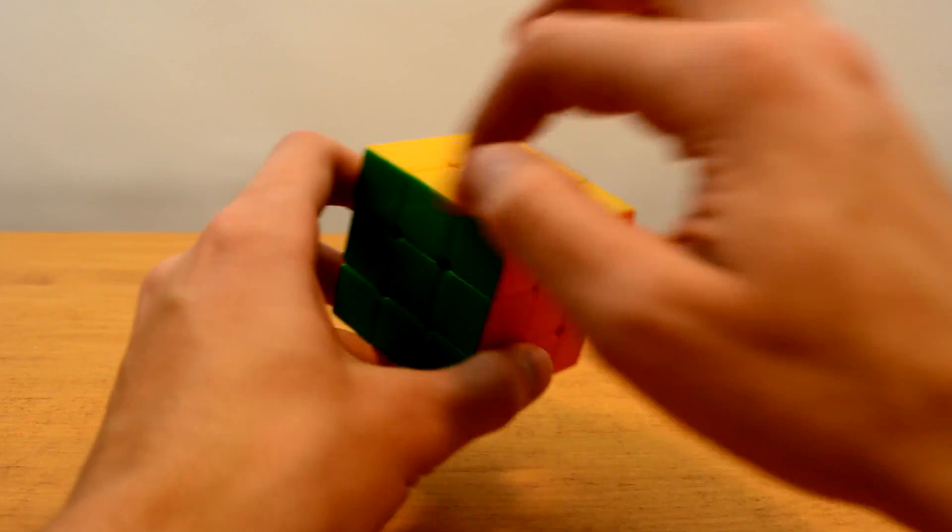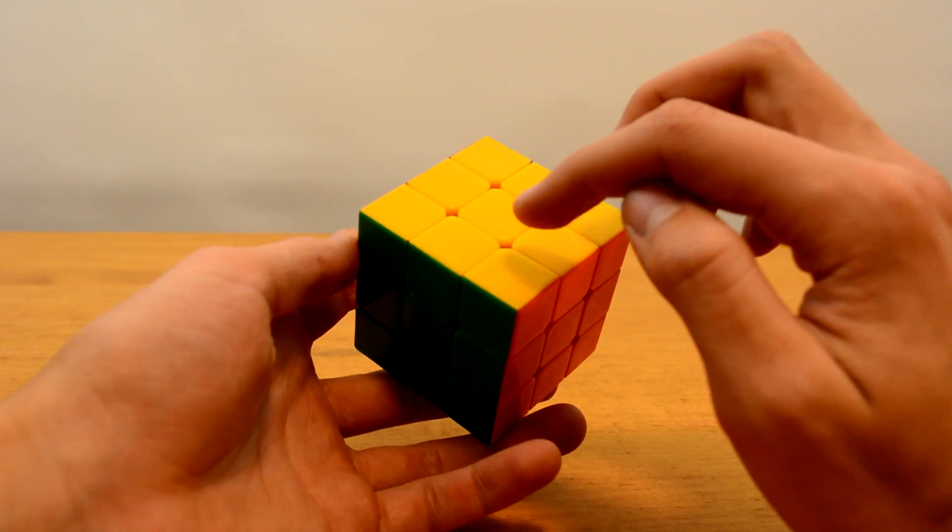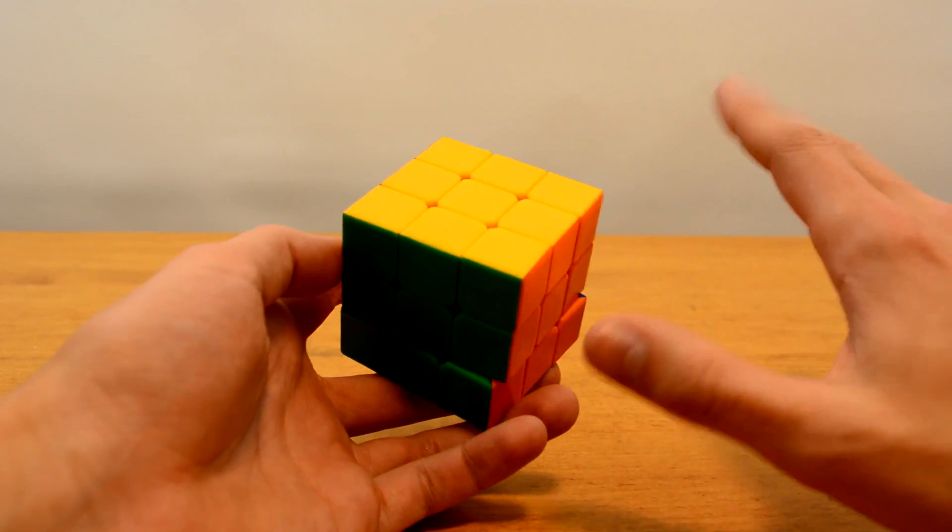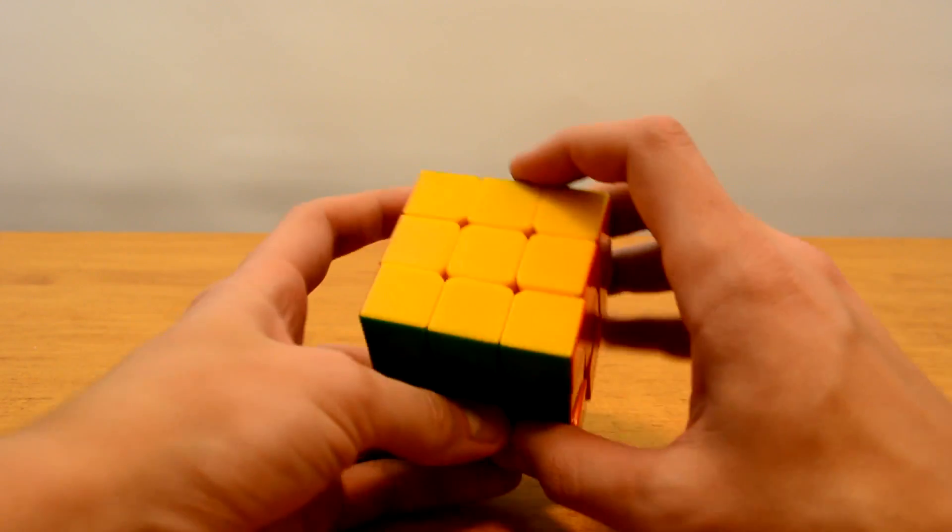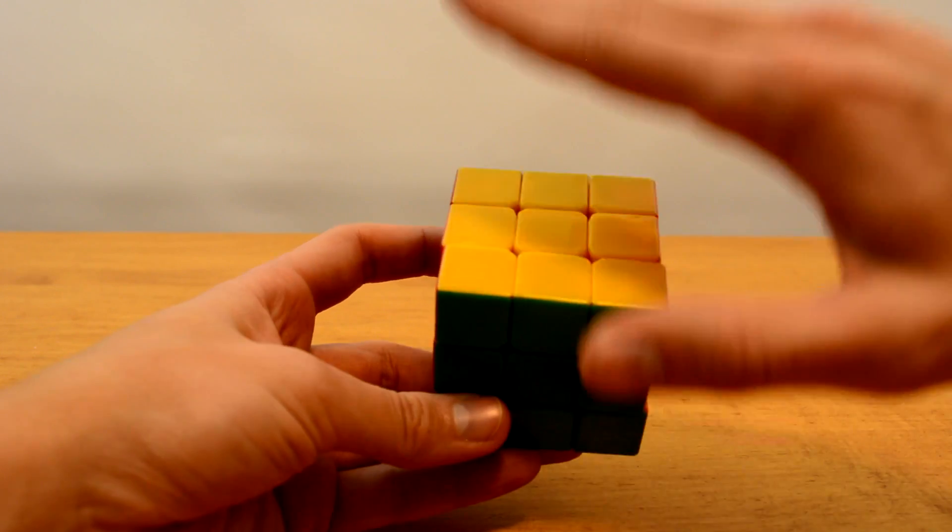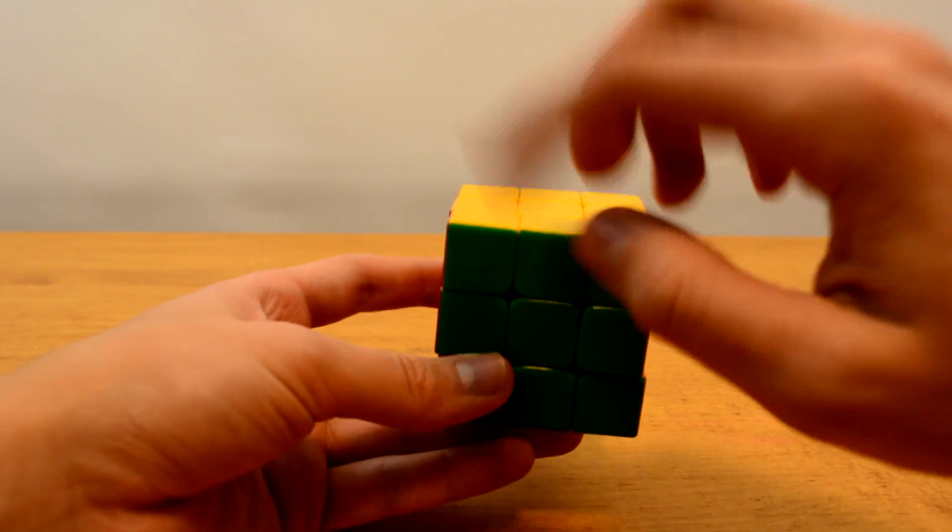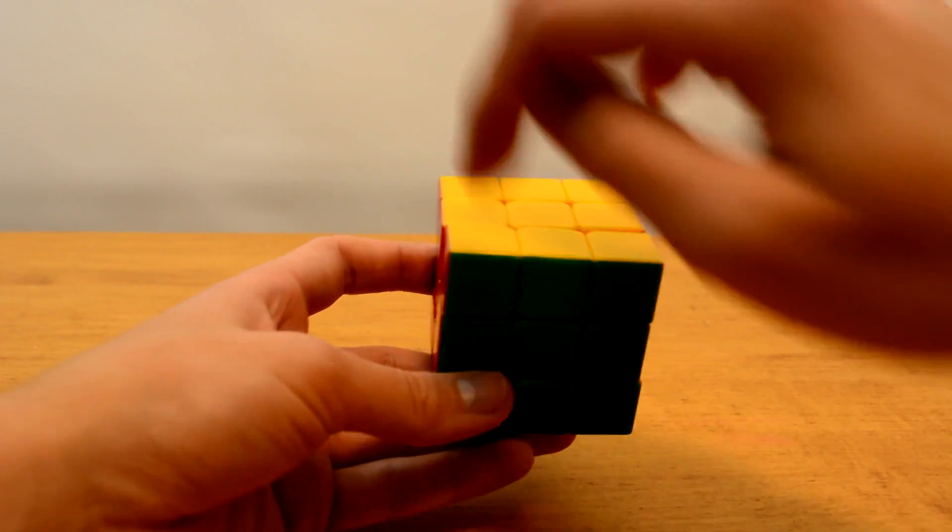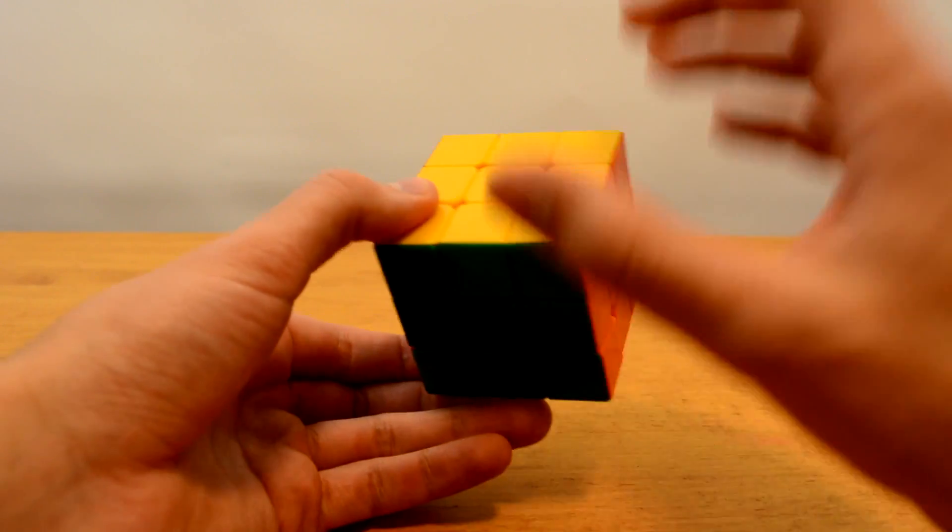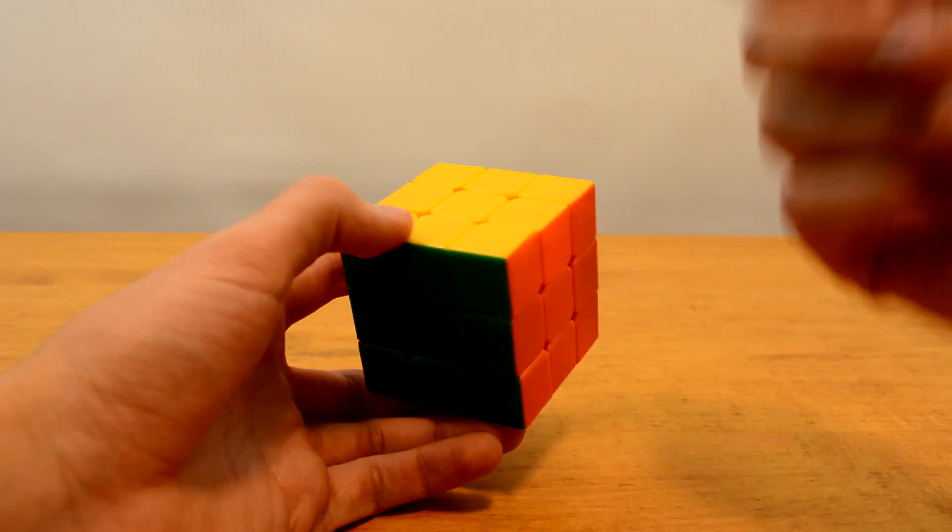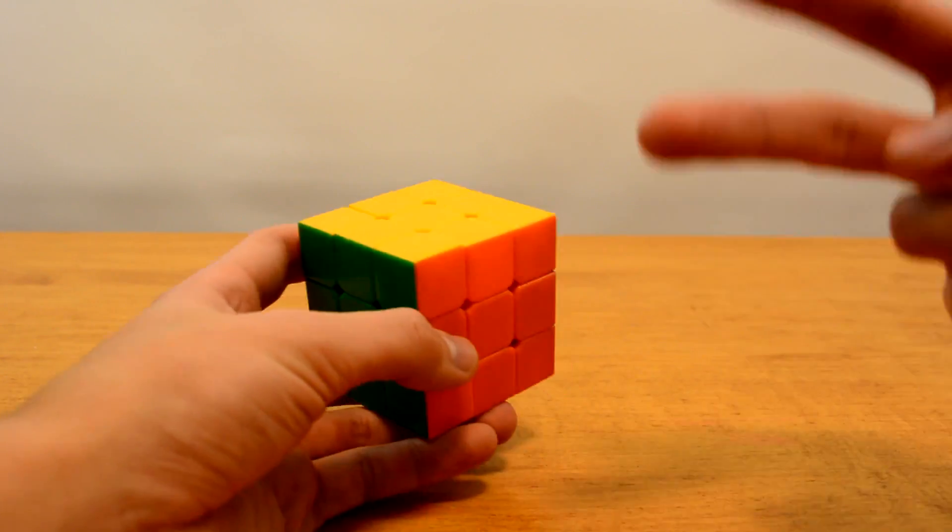And for the bottom layer, OLL just requires you to apply a single algorithm. So whatever it is that your cube looks like, you apply one single algorithm and suddenly your entire bottom layer is oriented. And then PLL is another algorithm that will then permute all the pieces and solve the cube, which means that instead of applying four different algorithms multiple times for the bottom layer, you literally just apply two algorithms and the whole bottom layer is done.